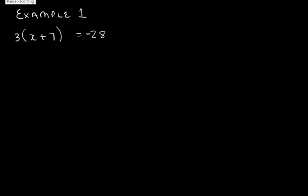So let's look at example one. We've got 3(x+7) = -28. Now what we need to do is we need to remove the brackets. And how do we get rid of the brackets? We get rid of the brackets by multiplying in.